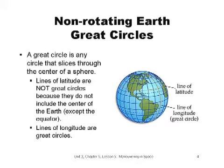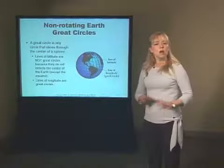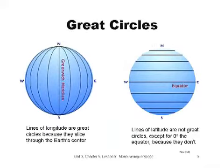A great circle is any circle that slices through the center of a sphere, in our case the Earth. In this diagram, you can see two types of circles: those created by lines of latitude that are parallel to Earth's equator but do not include the center of the Earth, and lines of longitude, which are perpendicular to the equator and go through the center of the Earth. So, which circles are great circles — lines of latitude or lines of longitude? Lines of latitude are not great circles because they do not go through the center of the Earth. Lines of longitude are great circles because they go through or include the center of Earth. All Earth orbits are great circles because they include the center of the Earth.